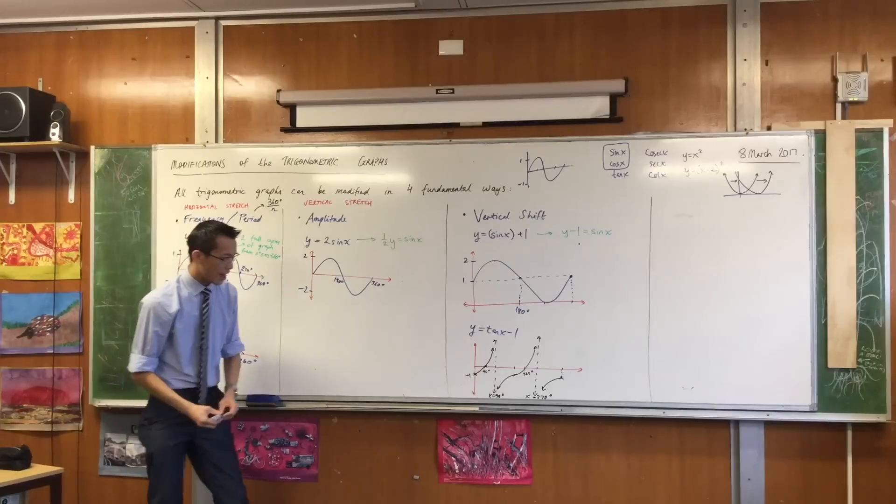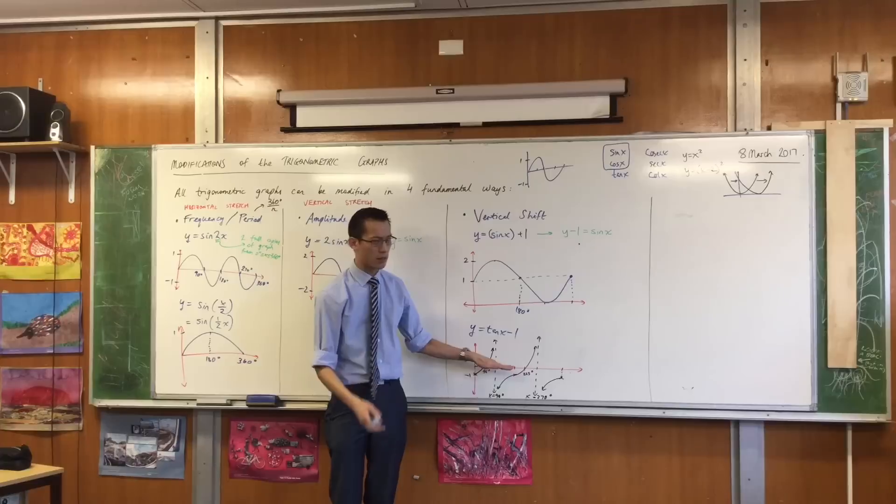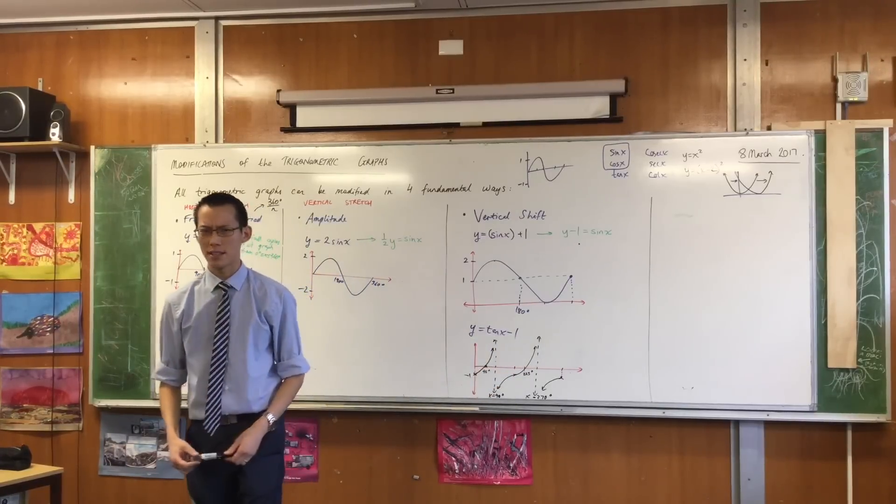Okay. Does that make sense? Do you see now, if I were to move this horizontal axis down 45 degrees, not down 45 degrees, down one unit, you get the familiar tan graph. Does that make sense? Okay.